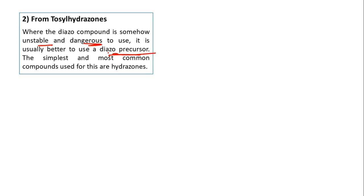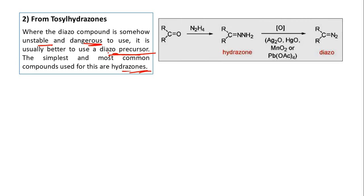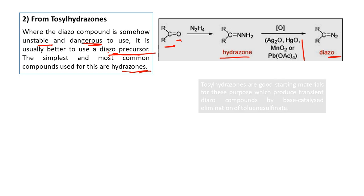First we have to know what is hydrazone. You can make it starting from a carbonyl compound and N₂H₄ (hydrazine): two hydrogen atoms from N₂H₄ and the oxygen are removed in the form of water, and ultimately you are getting hydrazone — this is the diazo precursor. In the presence of an oxidizing agent, finally we can get the diazo compound. But here we are interested in tosyl hydrazone, not simple hydrazone, because it is better.